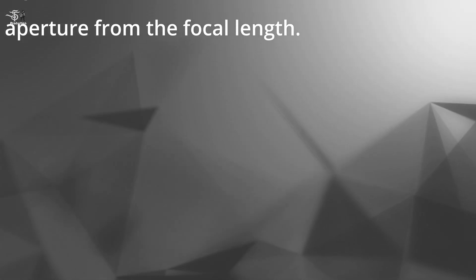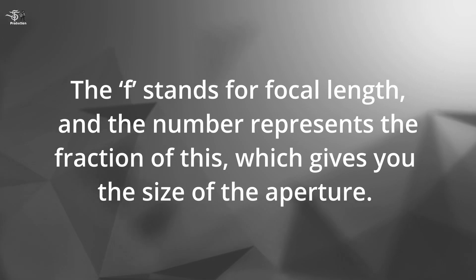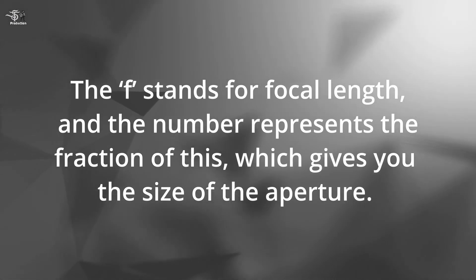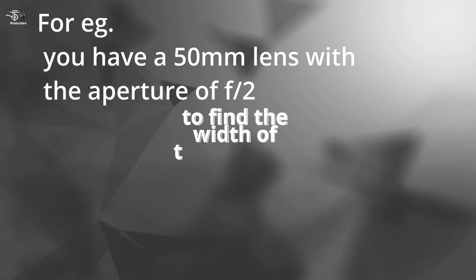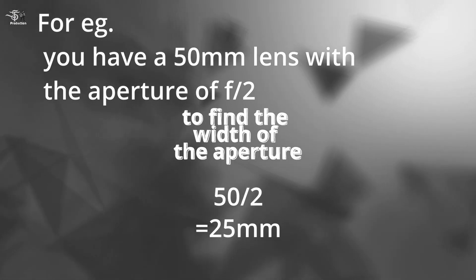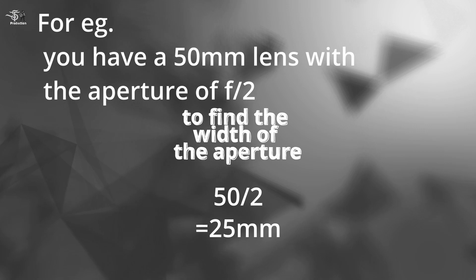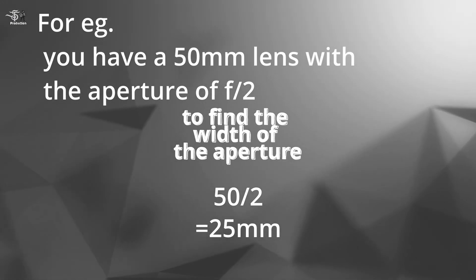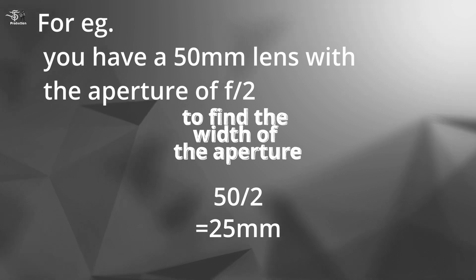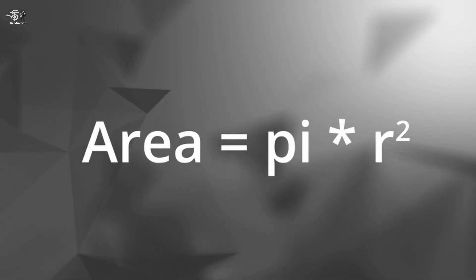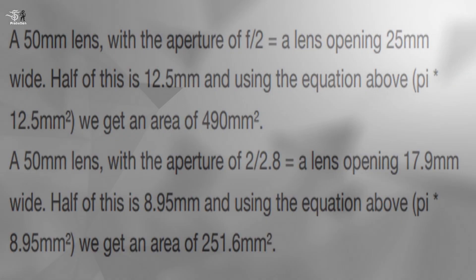This is because the number comes from the equation used to work out the size of the aperture from the focal length. The 'f' stands for focal length, and the number represents the fraction of this which gives you the size of the aperture. For example, with a 50mm lens at an aperture of f2, to find the width of the aperture you divide 50 by 2, giving you a diameter of 25mm. You then take the radius, square it, and multiply by pi. The whole equation looks like this — here are a couple of examples.